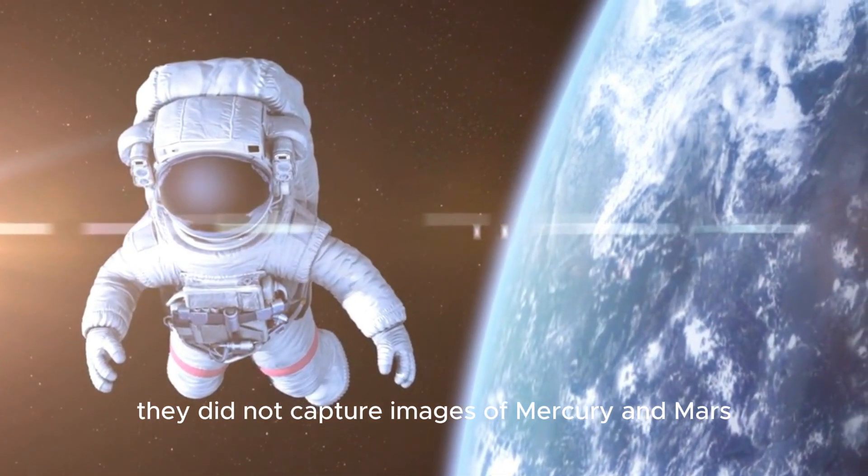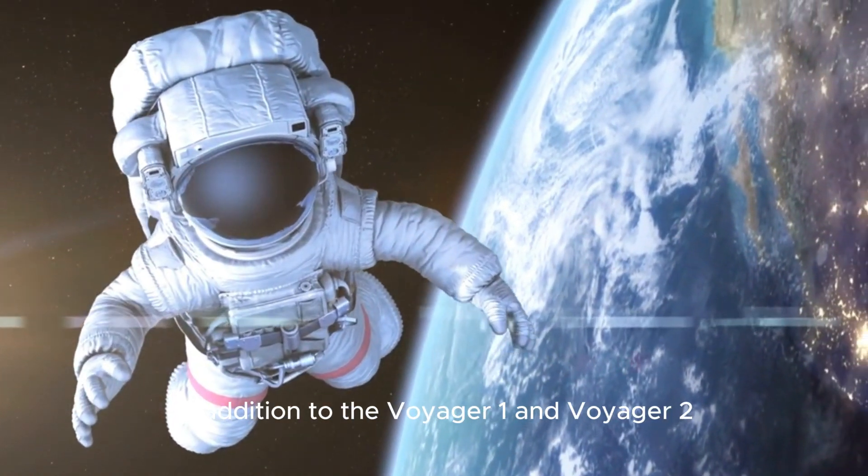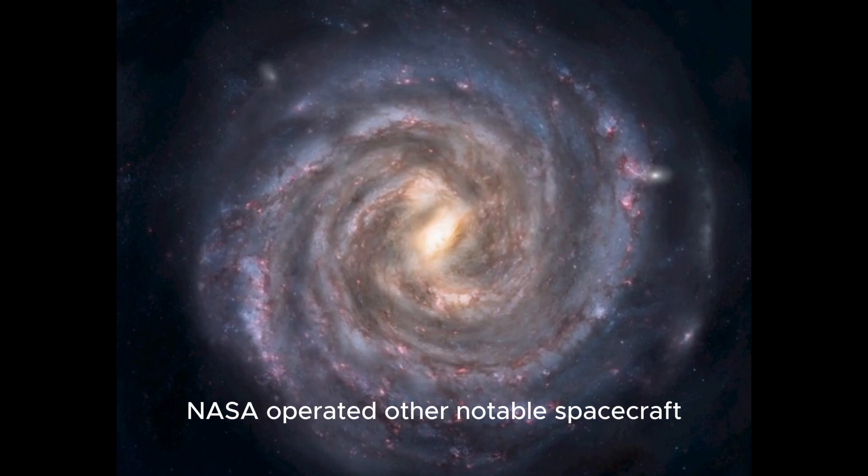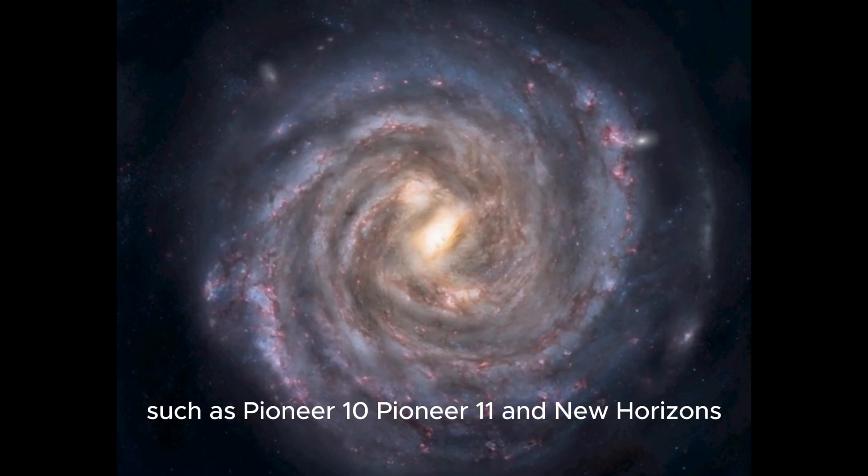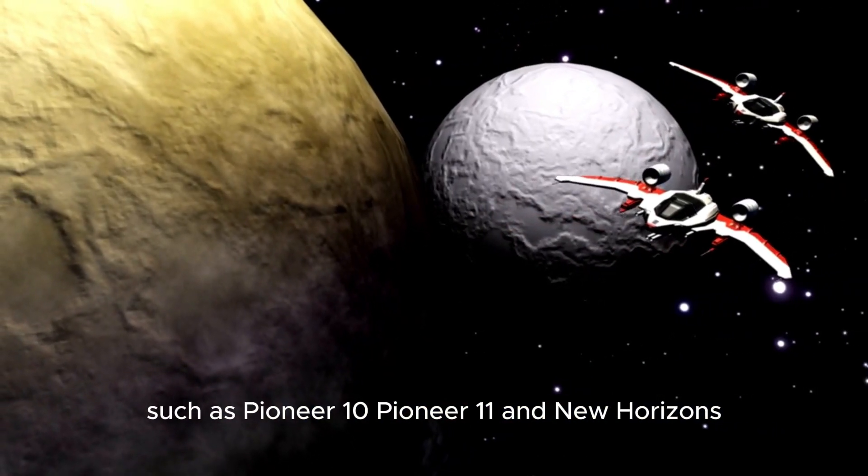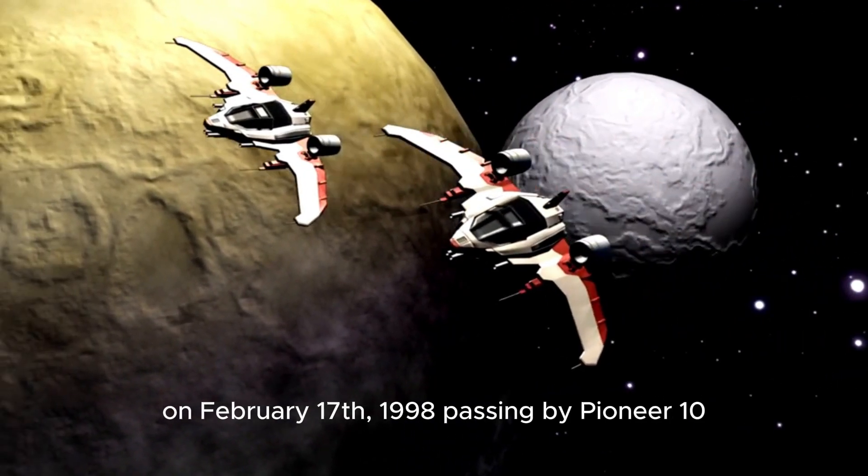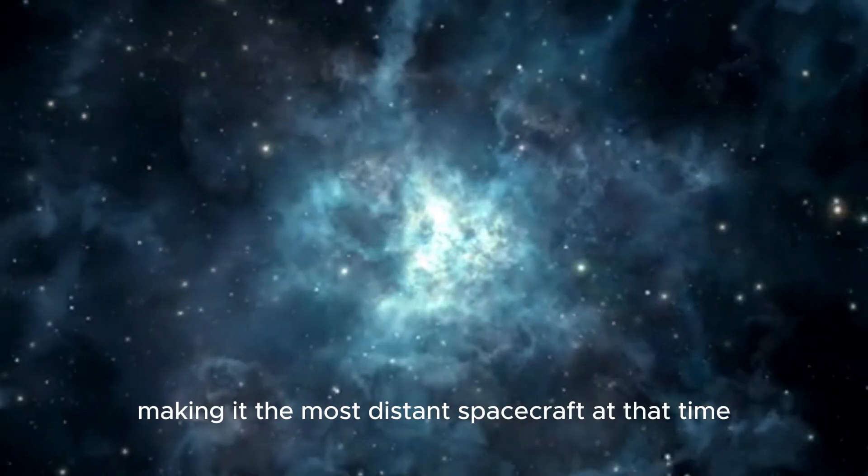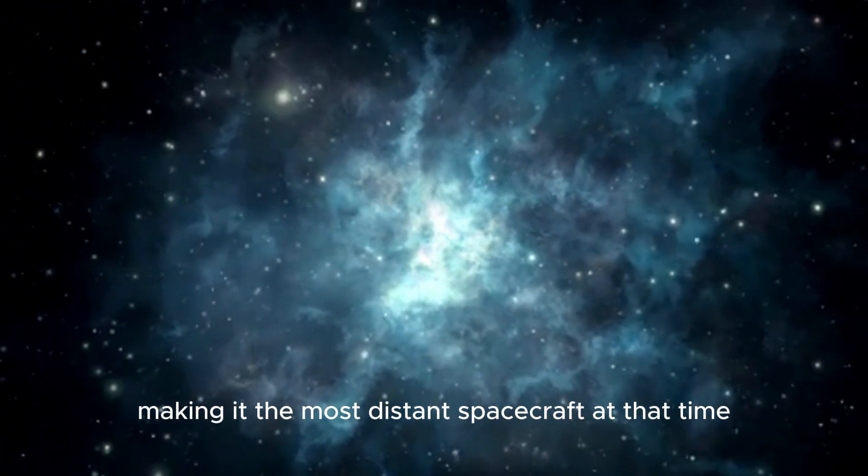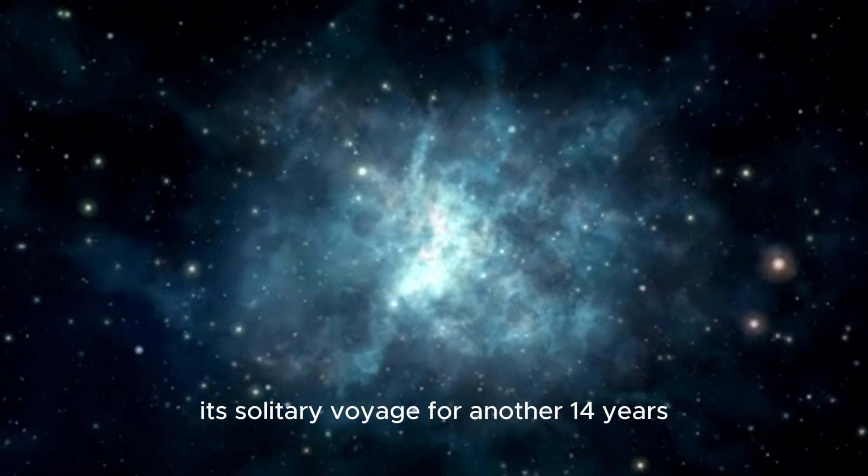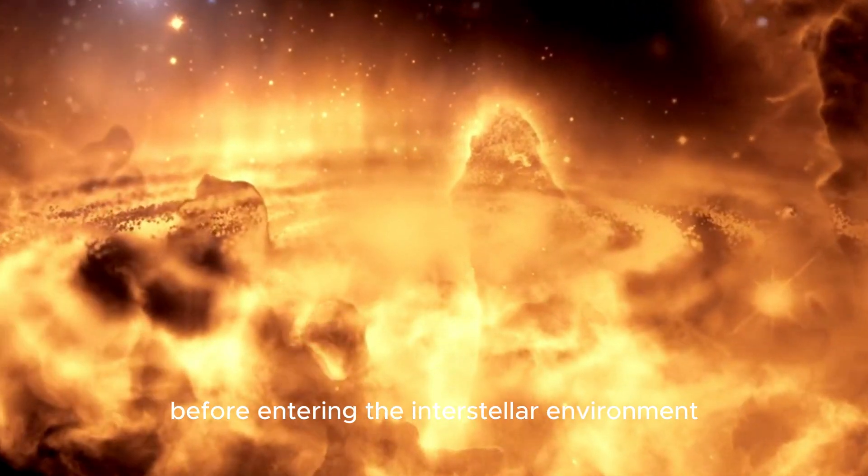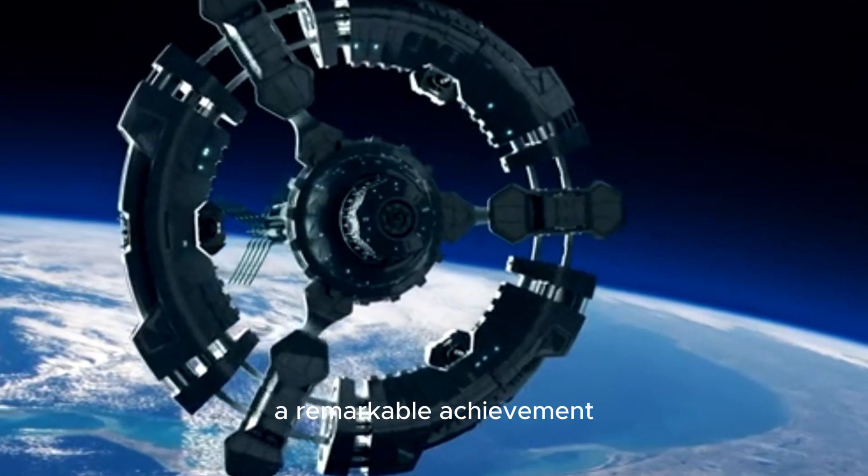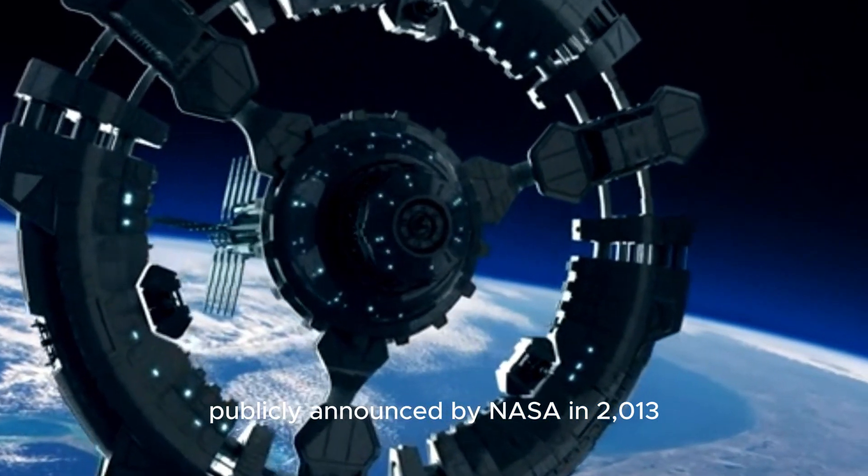While the cameras of the Voyager spacecraft were eventually powered down before their interstellar journey, they did not capture images of Mercury and Mars for various reasons. In addition to the Voyager 1 and Voyager 2 interstellar probes, NASA operated other notable spacecraft such as Pioneer 10, Pioneer 11, and New Horizons. Voyager 1 marked a historic moment on February 17, 1998, passing by Pioneer 10, making it the most distant spacecraft at that time. Voyager 1 continued its solitary voyage for another 14 years before entering the interstellar environment on August 25, 2012, a remarkable achievement publicly announced by NASA in 2013.